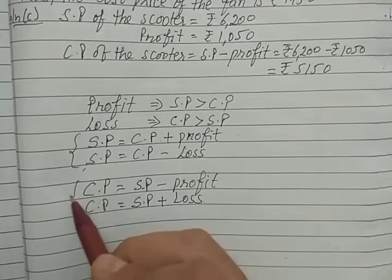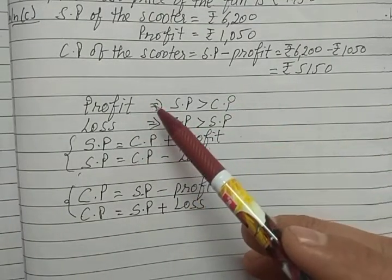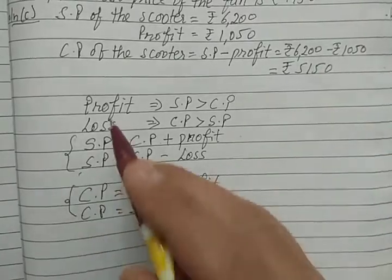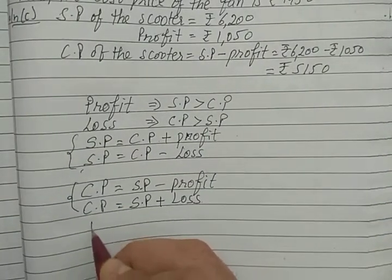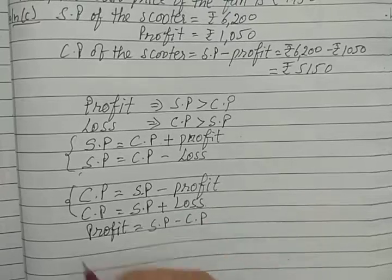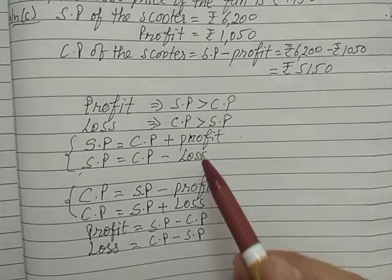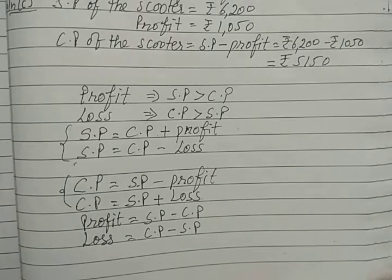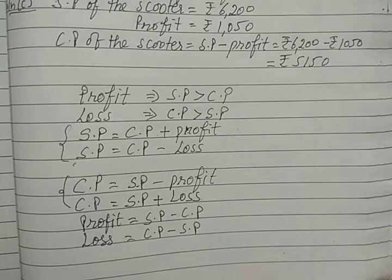Learn these formulas well, as the entire unit is based on them. To find profit: profit equals selling price minus cost price. To find loss: loss equals cost price minus selling price. Learn these formulas by heart, then you can solve all problems in this unit. In the next video we will discuss the value-based questions and brain teasers of this unit. Thank you.